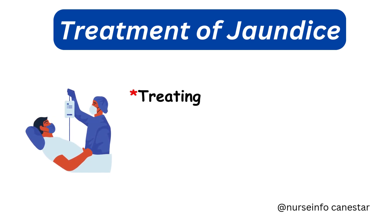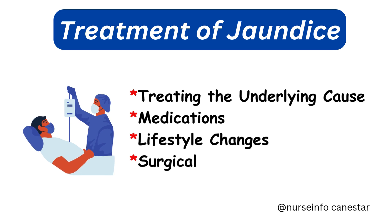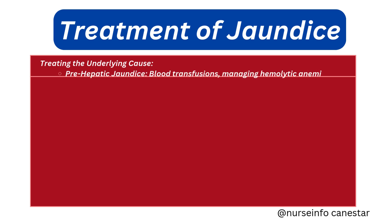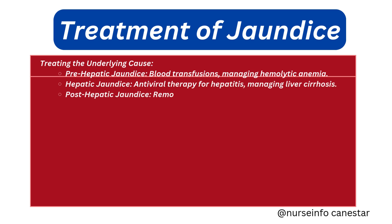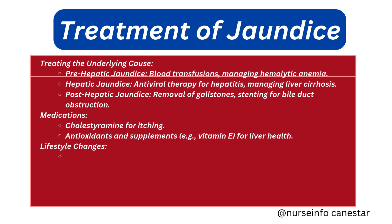Treatment of jaundice depends on addressing the underlying cause. Prehepatic jaundice is managed with blood transfusions or medications for hemolytic conditions. Hepatic jaundice is treated with antiviral therapy for hepatitis, and lifestyle modifications and medications for alcoholic or fatty liver disease. Post-hepatic jaundice may require surgical removal of gallstones or stenting and bypass procedures for bile duct strictures.